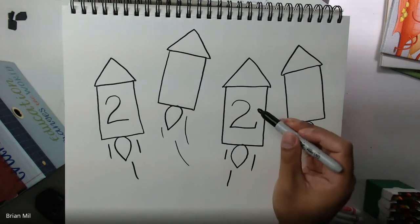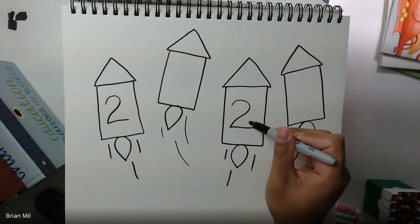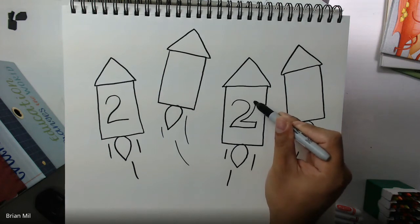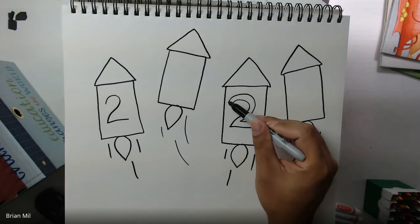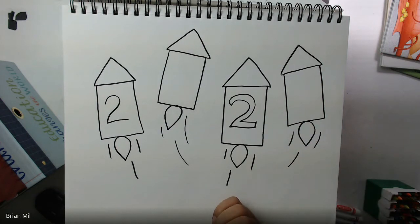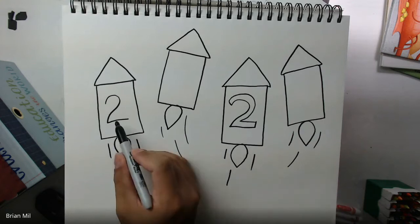Just like so and then close it off at the end. So you can do either or, you need to do a blocky number two or a regular number two.